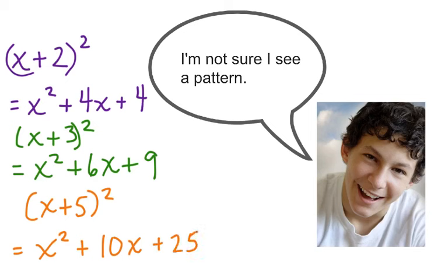Now you might start to see a pattern. And it has to do with whatever this number is becoming the middle term and this relationship becoming the end term.